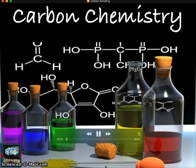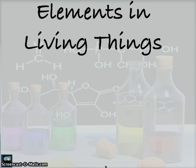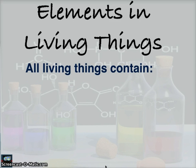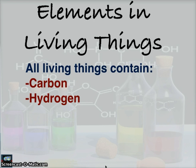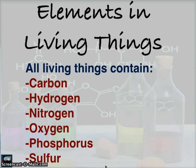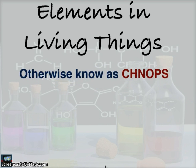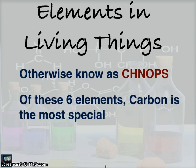Thank you for joining me for carbon chemistry. Let's take a look at the elements in living things. The elements found in living things contain carbon, hydrogen, nitrogen, oxygen, phosphorus, and sulfur — otherwise known as CHNOPS. Of these six elements, carbon is the most special.